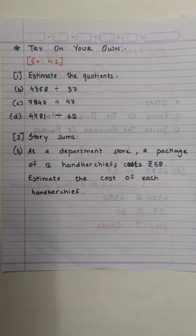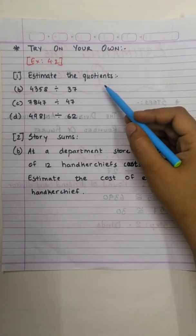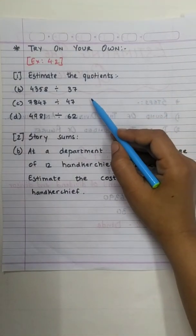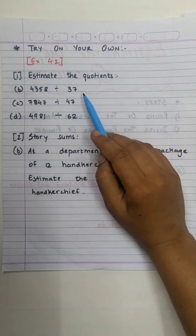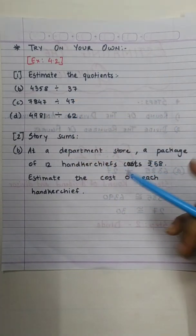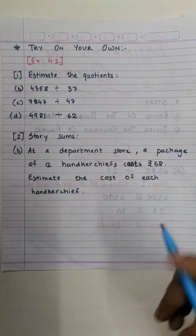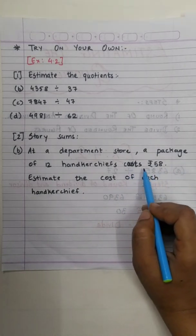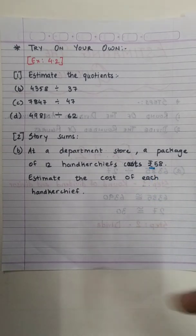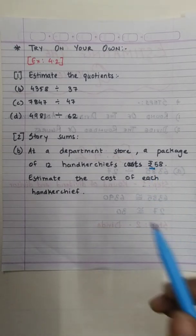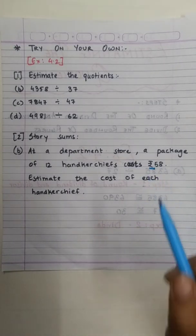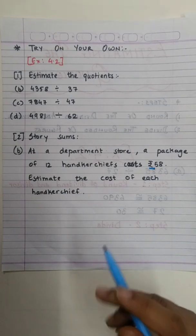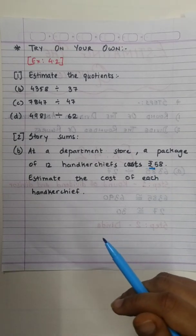Now try the remaining exercise on your own. Estimate the quotients — you know how to round off dividend and divisor and find the quotients quickly. Also solve the story sum. Remember, this story sum is talking about cost, so don't forget to use the rupees sign in your answer. All the best.